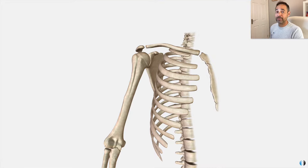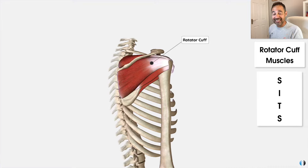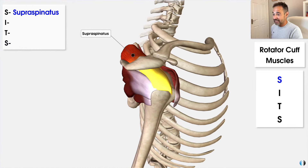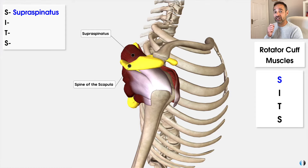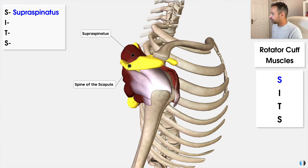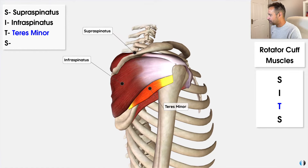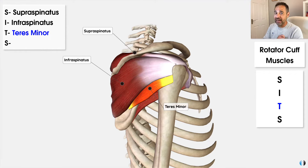If you want a cool memory aid to help you remember the key rotator cuff muscles, just remember the acronym SITS — S-I-T-S — because each letter corresponds to one of the four muscles that make up this group. The first S stands for supraspinatus, which effectively means superior to the spine of the scapula. This muscle has a key role in external rotation of the shoulder and perhaps also contributes a little towards abduction. Then we have the I, which is for infraspinatus — inferior or below the spine of the scapula — which also contributes to external rotation. Then we have T for teres minor, which also contributes to external rotation of the shoulder. Notice how SIT, these muscles are in order from top to bottom on the posterior aspect of the scapula.